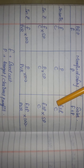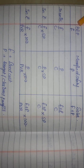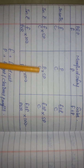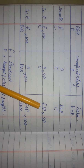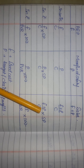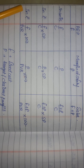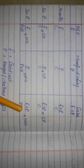If the question asks to calculate BEP, margin of safety, and sales in rupees, you can use two methods. Method one: multiply each by selling price — F ÷ C × selling price, P ÷ C × selling price, (F + P) ÷ C × selling price. Method two: if the PV ratio is known, use F ÷ PVR × 100, P ÷ PVR × 100, and (F + P) ÷ PVR × 100 to find all three in rupees.